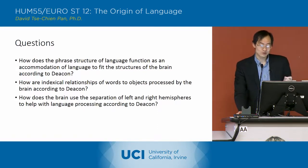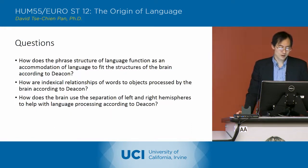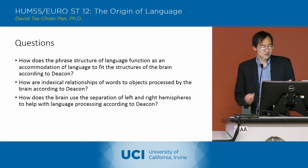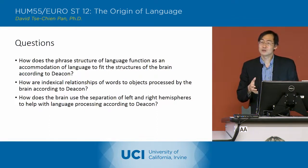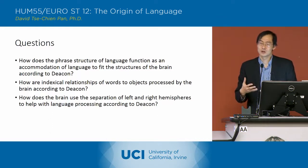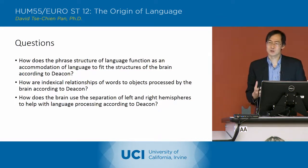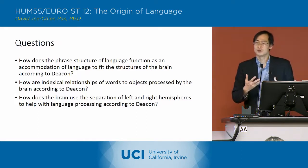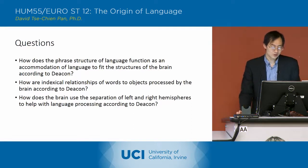How does the phrase structure of language function as a combination of language to fit the structures of the brain, according to Deacon? The phrase structure allows different pieces of the processing of a sentence or of language to be done in different parts of the brain at the same time, and that helps to ease the burden on the brain of processing language.